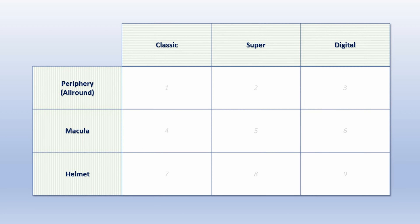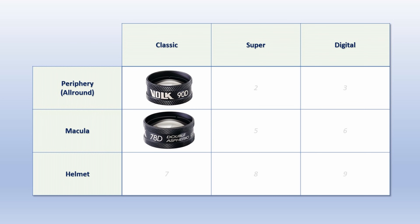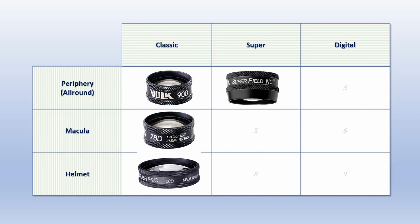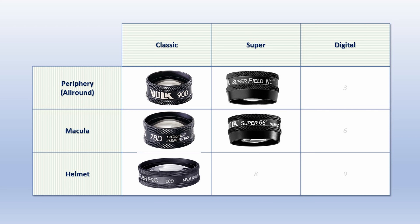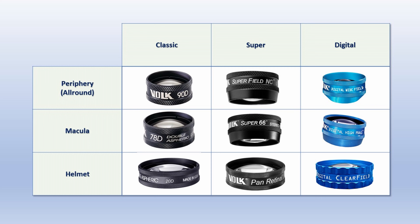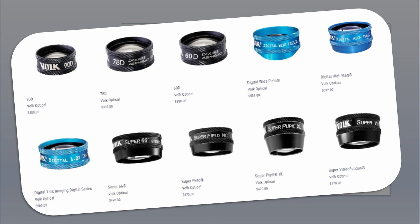In the classic series we have the 90D, 78D, and the 20D. The super series, which is a bit newer, has the Superfield, Super 66, and Pan Retinal 2.2. The digital series, which came out a couple of years ago, has the Digital Wide Field, the Digital High Mag, and the Digital Clear Field. I chose these nine most important lenses Volk produces and put them into categories.